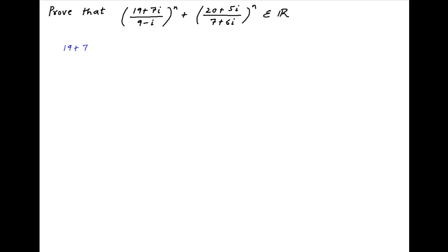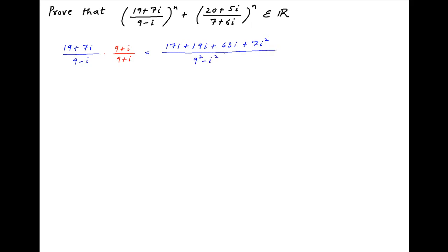We start with the complex number in the first term: 19 plus 7i divided by 9 minus i. Multiply and divide this with the conjugate of the denominator, i.e. 9 plus i. Therefore, this number is equal to 171 plus 19i plus 63i plus 7i square in the numerator divided by 9 square minus i square. Now, i square is equal to minus 1, and therefore this expression is equal to 164 plus 82i divided by 82, which simplifies to 2 plus i.